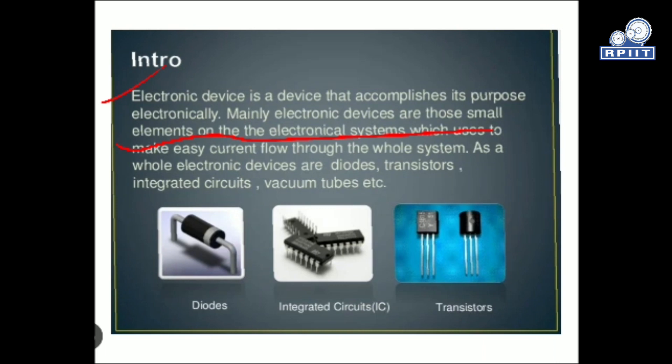As a whole, electronic devices can be a diode, transistor, integrated circuit, vacuum tube, etc. These are the most important electronic devices we are using nowadays.